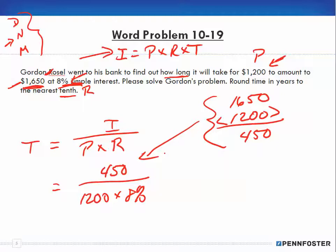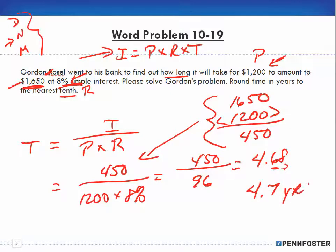Now when we do the math, we keep our $450 in the numerator and 8% of $1,200 is $96. Then we divide the $450 by the $96 and we end up with 4.68. It says round to the nearest tenth, so I look at my tenths, look to the right, eight is greater than five so we round up to 4.7 years. That's our answer.